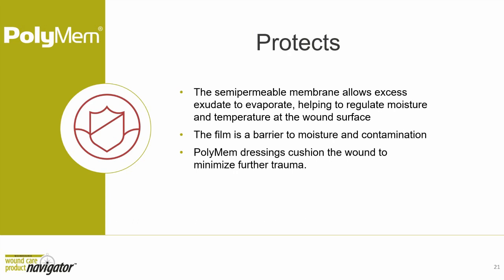The semi-permeable film membrane on combined primary-secondary dressings allows excess exudate to evaporate, helps regulate moisture and temperature at the wound surface, and acts as a barrier to contamination. PolyMEM also provides cushioning of the wound bed to minimize further trauma.